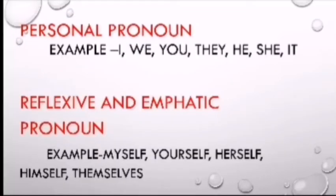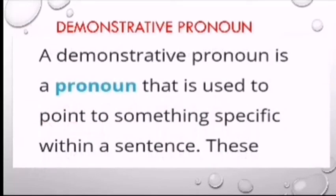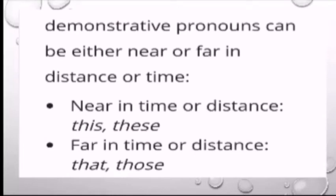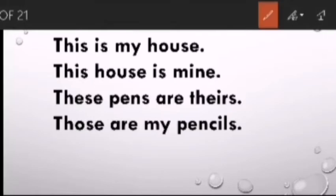Now let's learn about demonstrative pronoun. A demonstrative pronoun is a pronoun that is used to point to something specific within a sentence. These demonstrative pronouns can be either near or far in distance or time. For near in time or distance we use 'this' and 'these', and for far in time or distance 'that' and 'those' are used. 'This' stands for singular, 'that' is also for singular, while 'these' and 'those' are for plural.